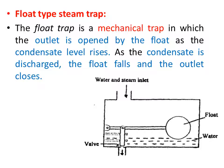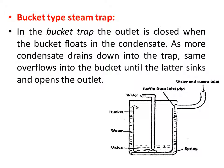The float type steam trap is a mechanical trap in which the outlet is opened by a float as the condensate level rises. When the condensate is discharged, the float falls and the outlet is closed. In the bucket type steam trap, the outlet is closed when the bucket floats in the condensate. As more condensate drains into the trap, it overflows into the bucket until the bucket sinks and opens the outlet.